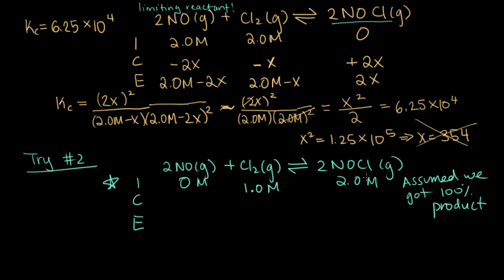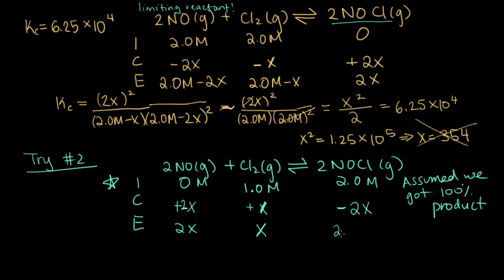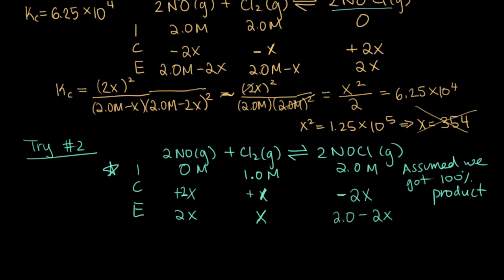We assumed it went to all product, but we're not quite at equilibrium. So we set up the ICE table for the reverse reaction: we expect a little bit of NO to appear at equilibrium, so that's plus 2x; a little more Cl2, so plus x; and minus 2x for NOCl. Adding the initial and change rows, we get 2x for NO, x for Cl2, and 2.0 minus 2x for NOCl.